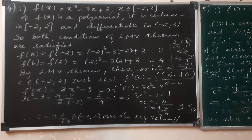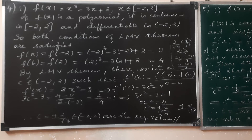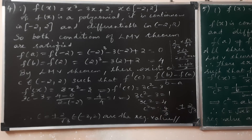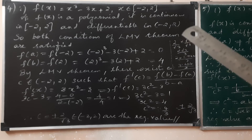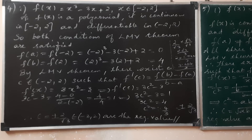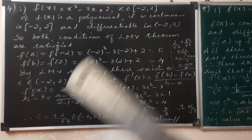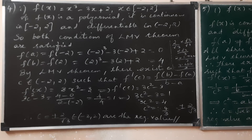So 3c² minus 3 should equal [f(2) minus f(-2)] divided by [2 minus (-2)], which is [4 minus 0] divided by 4 = 1. Therefore 3c² minus 3 = 1, giving 3c² = 4, so c² = 4/3, and c = ±2/√3. Both values ±2/√3 belong to the open interval (-2, 2) and are the required values.